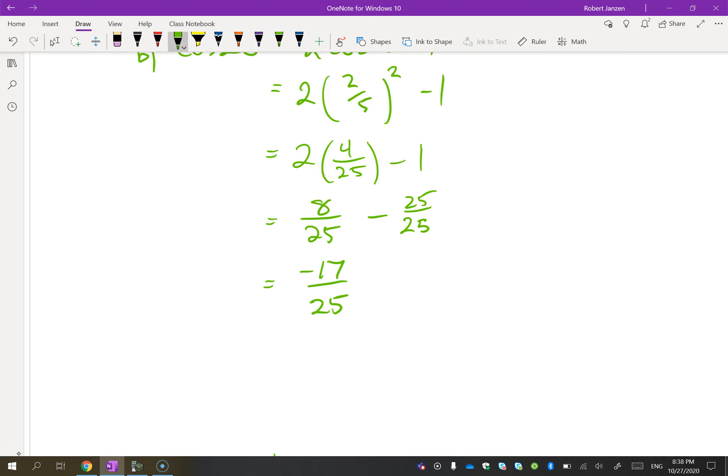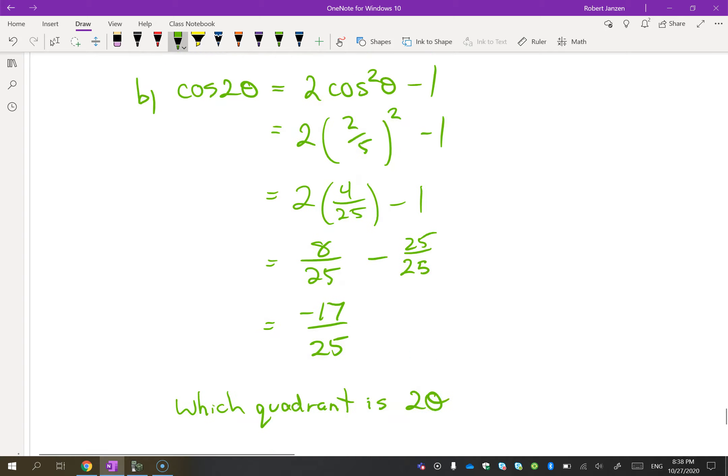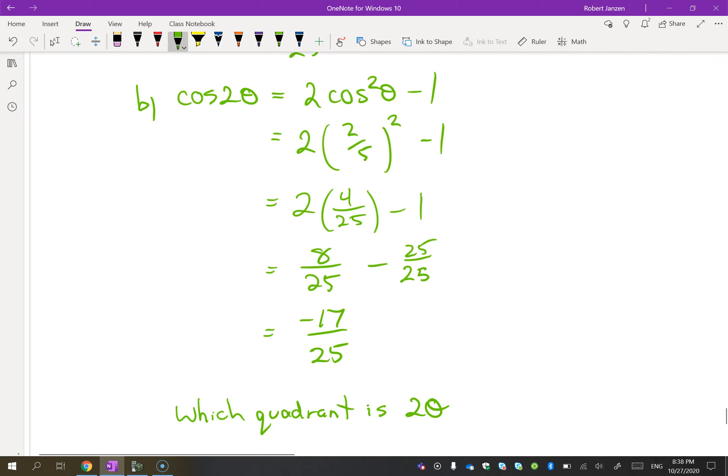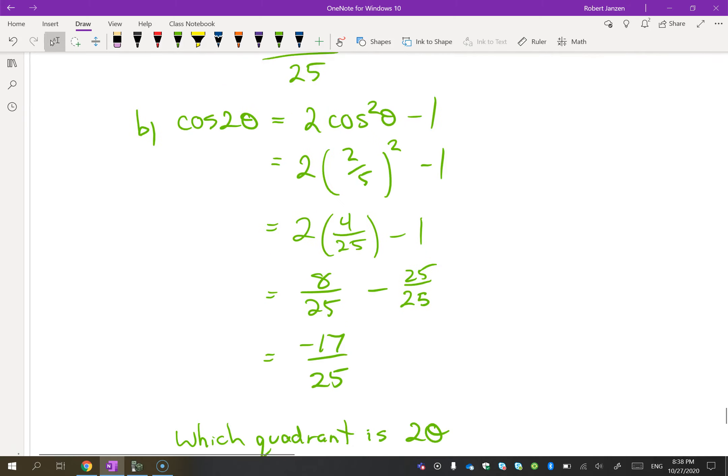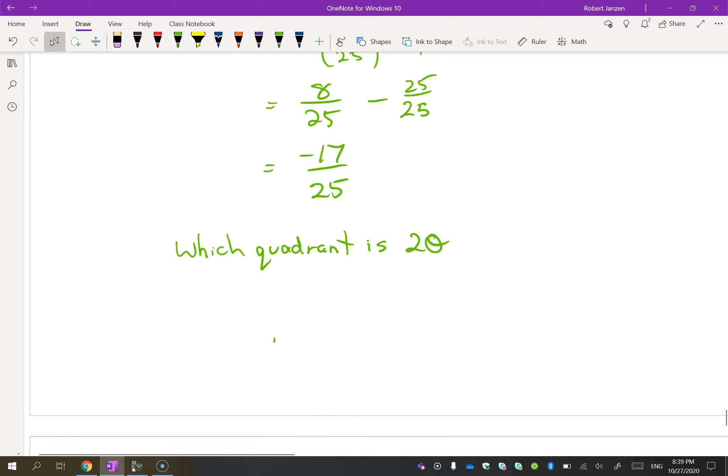Same question as last lesson. Which quadrant is 2 theta? In other words, the double angle. Which one is it in? Well, you see that sine is negative, and cos is negative. So, the answer would be quadrant 3, since sine of 2 theta and cos of 2 theta are negative.